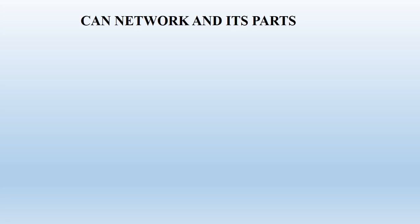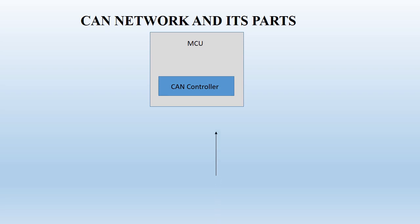In this lecture, let's explore what exactly a CAN node is. The node arrangement will be like this: you have a microcontroller, and in the microcontroller what you have is a CAN controller or CAN peripheral. The CAN controller peripheral gives you two single-ended pins — one is called CAN TX and the other one is called CAN RX. This is for reception and this is for the transmission of data.